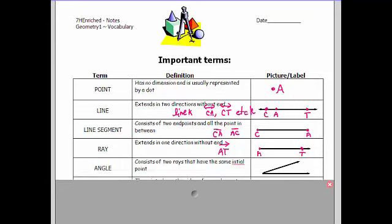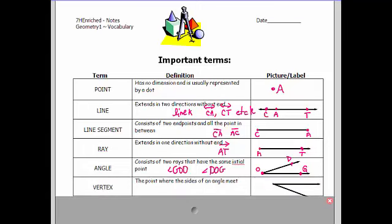An angle consists of two rays that have the same initial point. This is called the initial point and so I could have a point out here. The initial point is O and I have angle DOG. It could also be represented as angle GOD. A vertex is that initial point or the point where the sides of the angle meet. So we could call this angle Q.